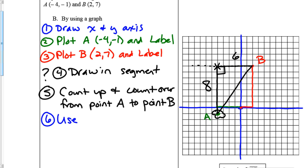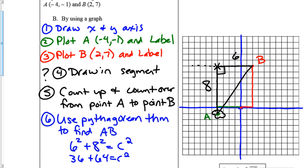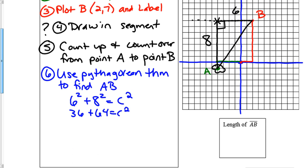So now I'm going to use Pythagorean theorem to find AB. So I will have 6² + 8² = c². Now, I worked this out in the problem before, and I know that I got 36 + 64 = c². I'm going to scroll down a little bit. That gives me 100 = c². I take the square root of 100, which is 10. So the length of AB is simply 10.